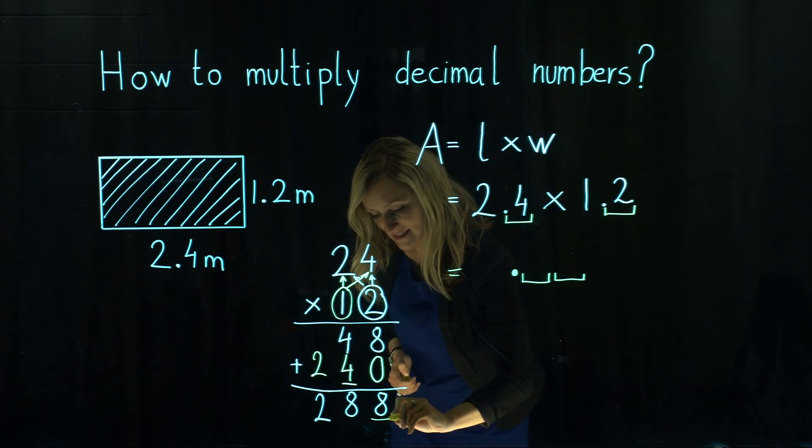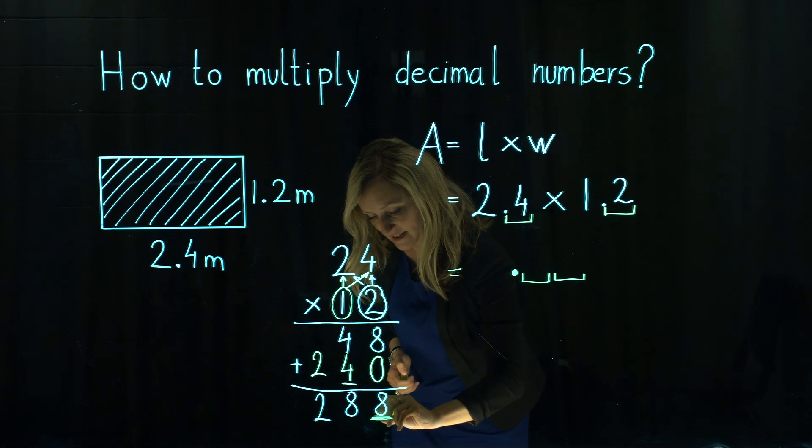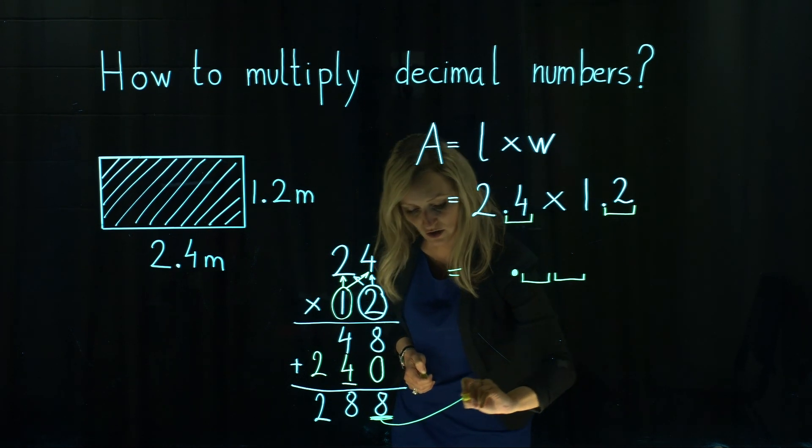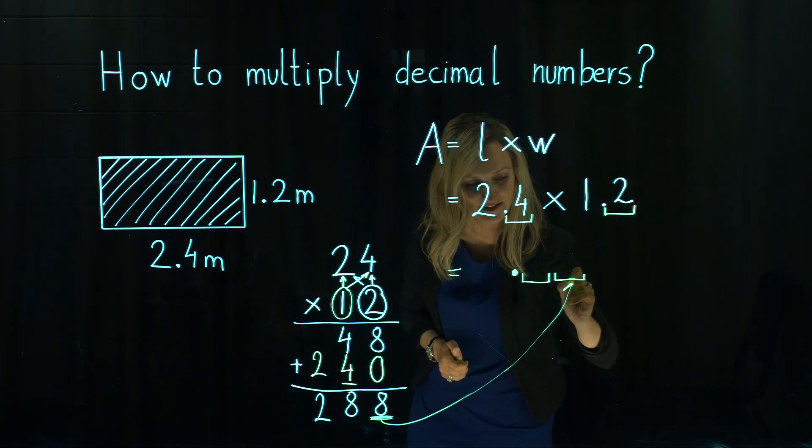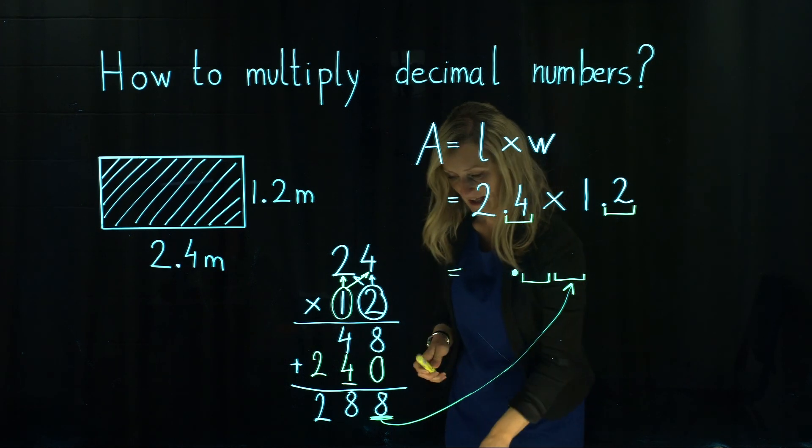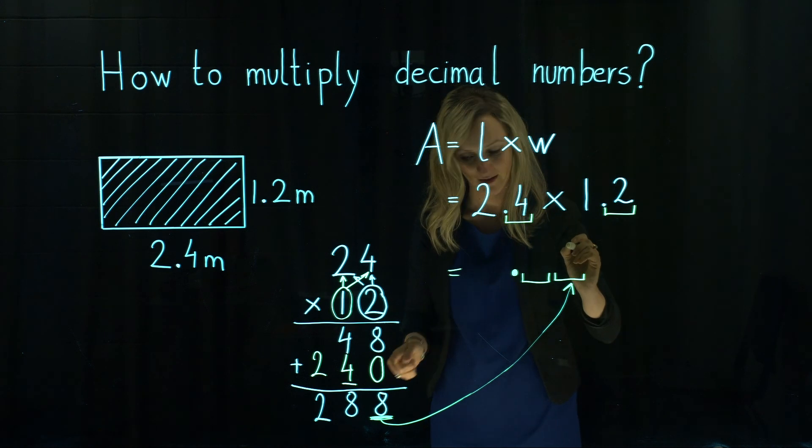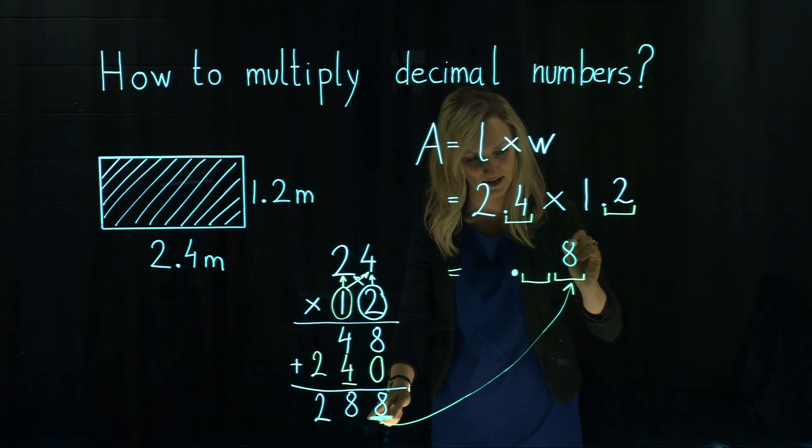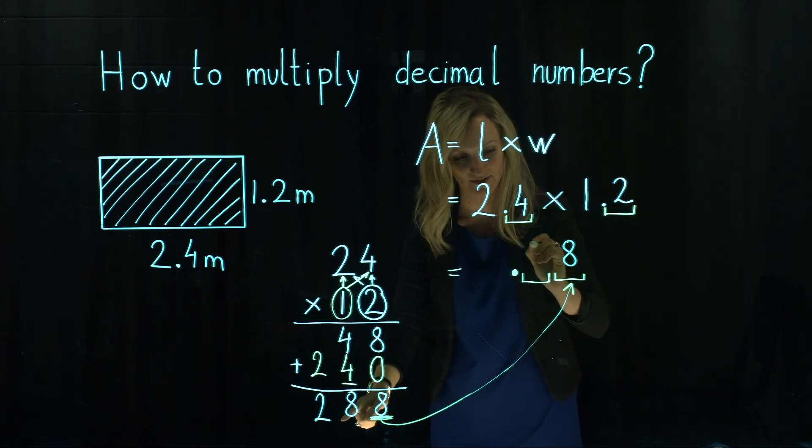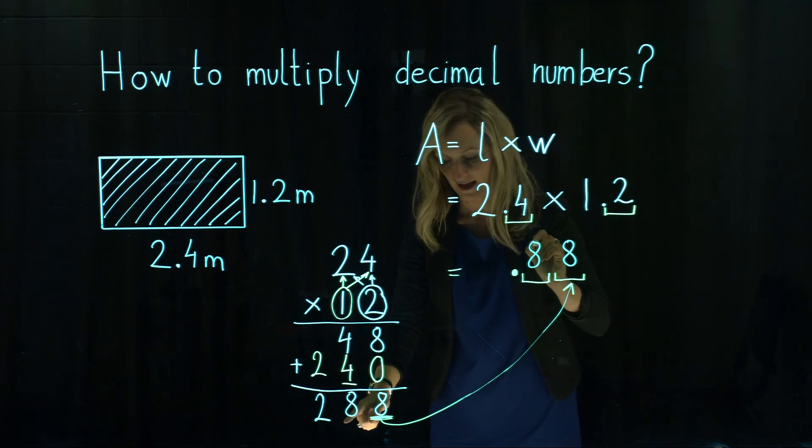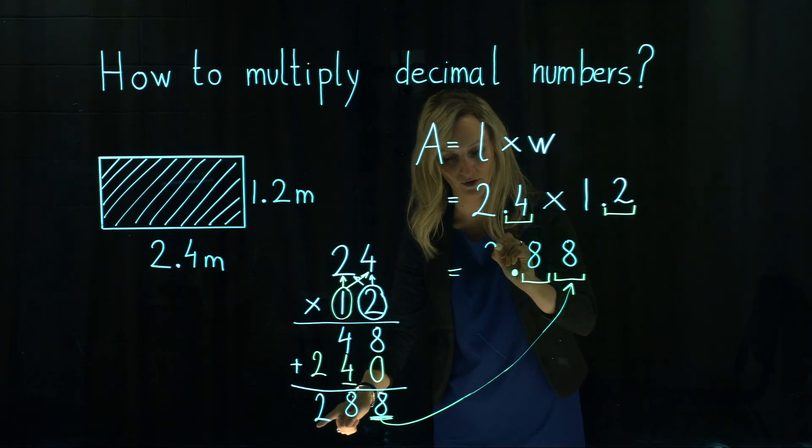That's why this last digit that we got in our answer when we were multiplying two whole numbers goes on the last decimal place. So we get 8 on the last decimal place, then another 8, and before the decimal point we've got a 2.